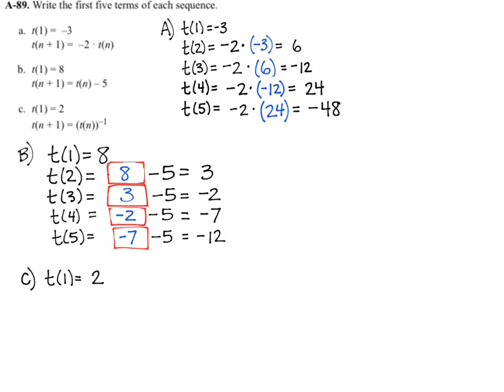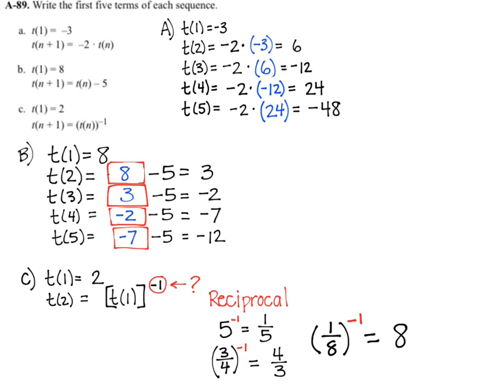The next one, T(1) is 2, and then it says the next term, or the term I'm interested in, is going to be the previous term to the negative 1. And what is that? What does the negative 1 power mean? If you recall from algebra 1, it means reciprocal. And reciprocal is to flip it. So 5 to the negative 1 is 1/5. 3/4 to the negative 1 is 4/3. And don't forget things like fractions of 1/8. If I flip that, I'd get 8.